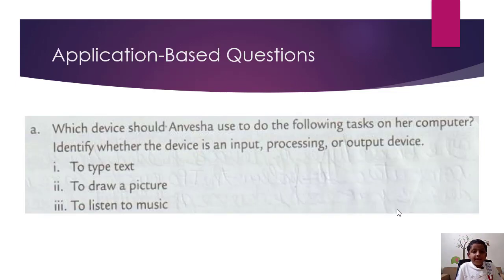Application based questions. A. Which device should Anubisha use to do the following tasks on a computer? Identify whether the device needs an input, processing, or output device. So first, to type text. So Anubisha needs to type some text, so for that she needs keyboard, and it's an input device.